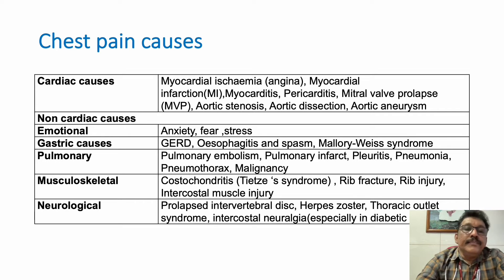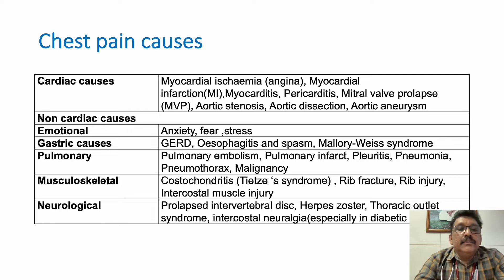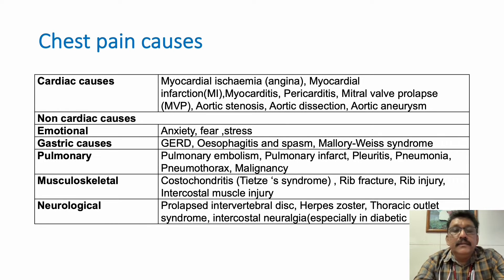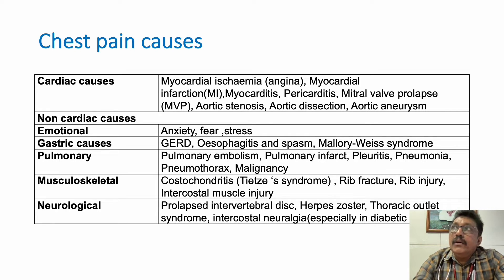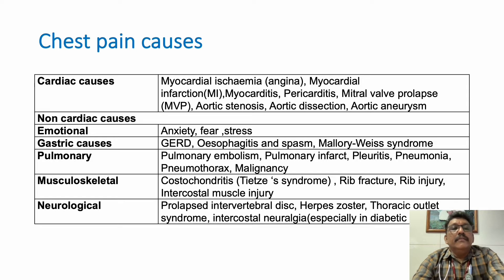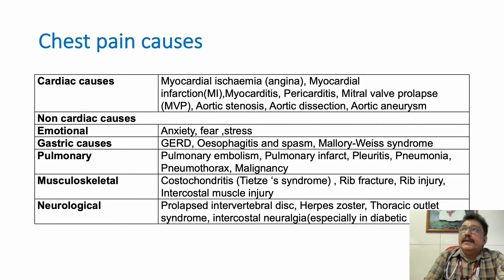The most important cause we cannot miss is myocardial ischemic heart disease — including myocardial infarction, myocardial ischemia, unstable angina, and Prinzmetal angina. Among all chest pain conditions, the ones we must never miss in the emergency room are myocardial infarction, aortic dissection, pulmonary embolism, and pneumothorax. These are very dangerous conditions, whereas other causes are relatively benign. We must make the correct diagnosis.